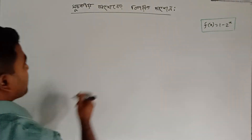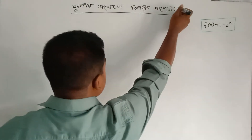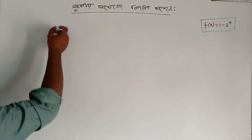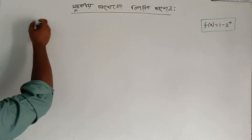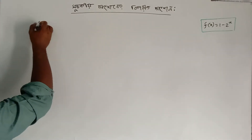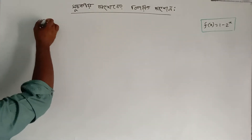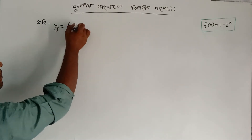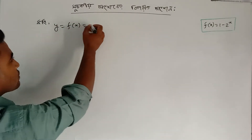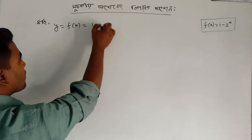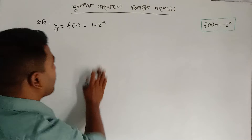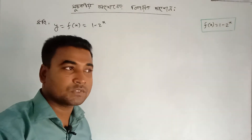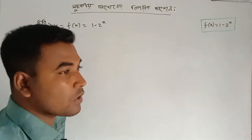The inverse function is a very good system. We will see that the inverse function is equal to f of x, which is equal to 1 minus 2 to the power x.